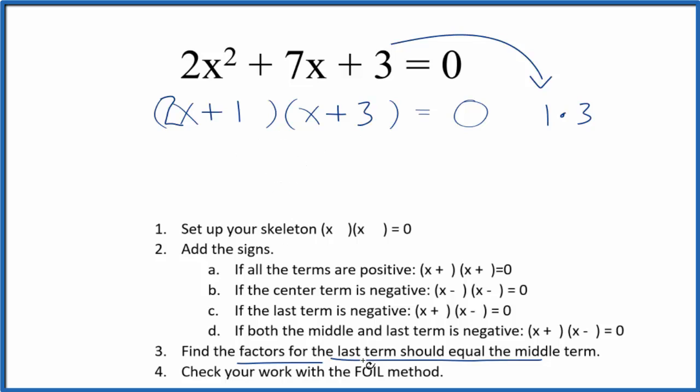And then we'll use the FOIL method to check our work. So 2x times x, that's the first term, that's 2x squared. Outside terms, 2x times 3, that's 6x.